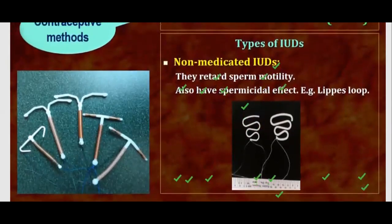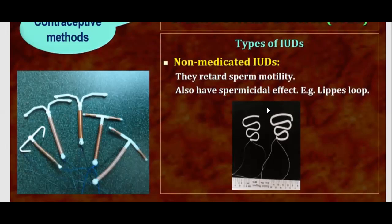These are the intrauterine devices. They can be T-shaped, Y-shaped, or spiral devices which are inserted inside the uterus. Non-medicated IUDs retard the sperm motility and also have a spermicidal effect. For example, the lipase loop — this is the lipase loop being shown on the screen.